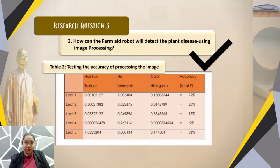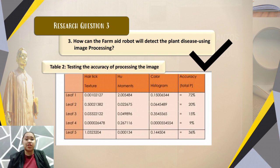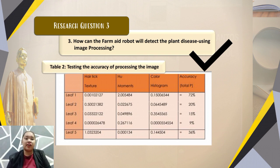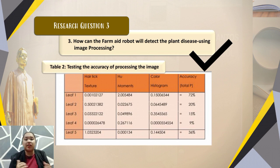For research question three, the researchers tested the accuracy of image processing in the robot. A total percentage formula was used to determine the accuracy of the robot while detecting diseases, considering texture, shape, and color histogram as visual parameters. In the first leaf test, the result shows 72 percent, indicating that the plant is growing normally.